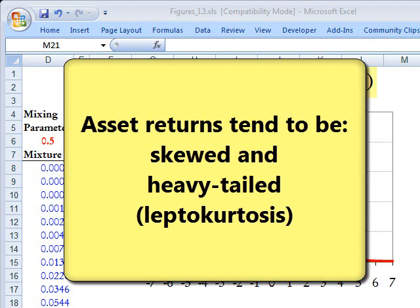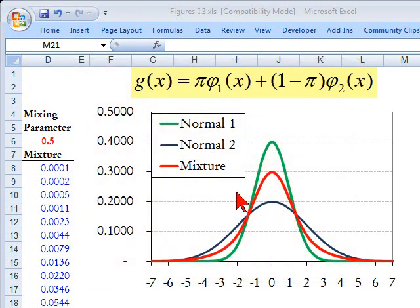Specifically, they tend to exhibit skew or skewness, and also what we call leptocurtosis or heavy tails. The normal mixture distribution can model heavy tails, and one of the nice things about it is how easy it is to use.